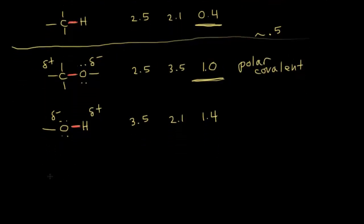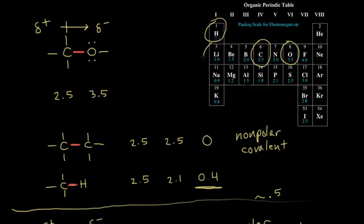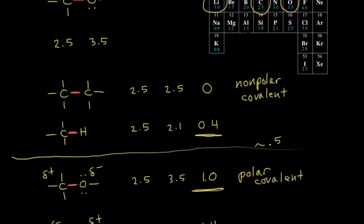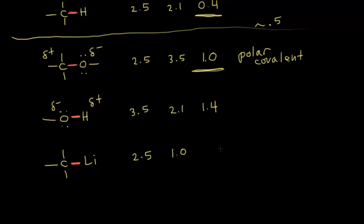Now let's look at carbon and lithium. Carbon has an electronegativity value of 2.5, and lithium in group one has a value of 1, giving a difference of 1.5. We could consider this to be a polar covalent bond — carbon is more electronegative than lithium, so electrons move closer to carbon, making carbon partially negative and lithium partially positive.